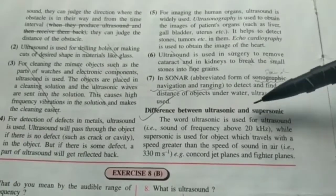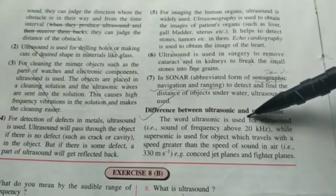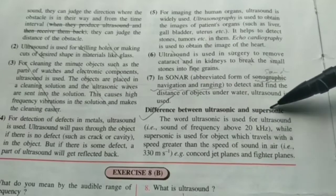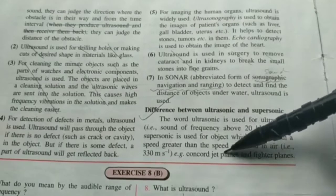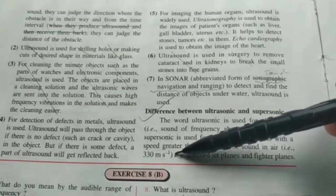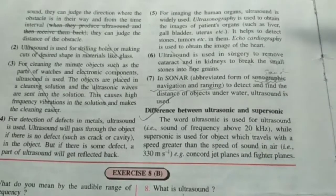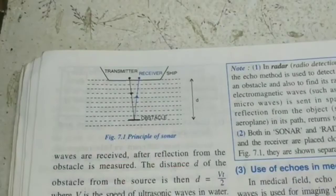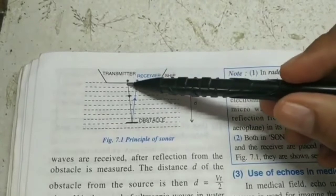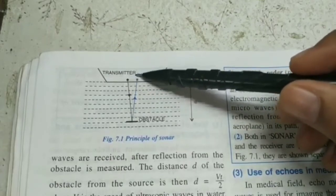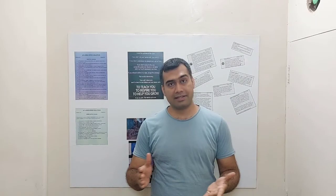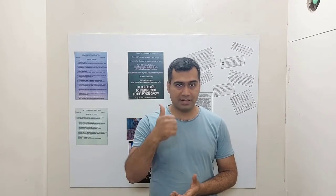SONAR — Sound Navigation And Ranging — is used to detect the ocean bed or submarines underwater. The difference between ultrasonic and supersonic: ultrasonic means sound whose frequency is above 20,000 Hz, while supersonic means any object traveling at greater than the speed of sound in air — for example, jet planes and fighter planes traveling faster than 330 m/s. This creates a sonic boom. In SONAR: a transmitter sends ultrasound, an obstacle reflects it, a receiver picks it up, the computer chip calculates the time, and from that calculates the distance.